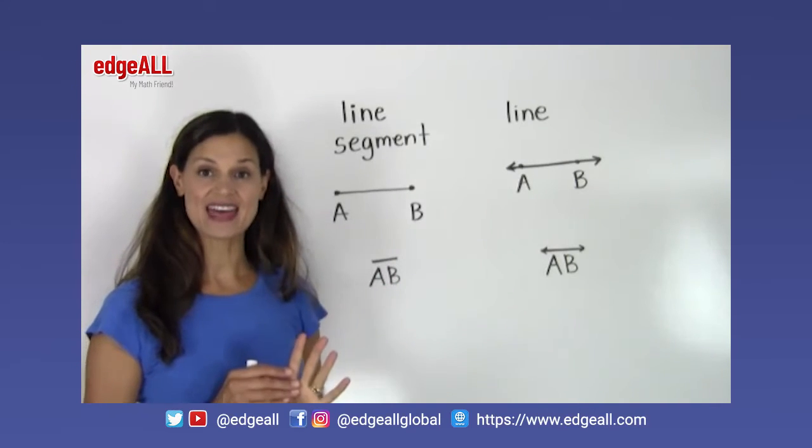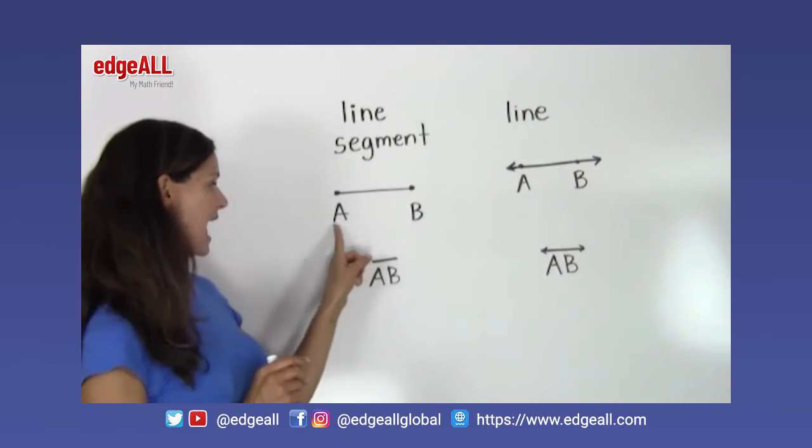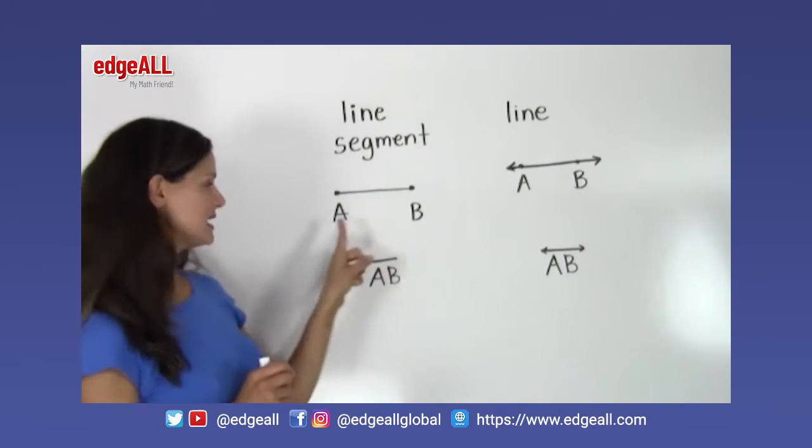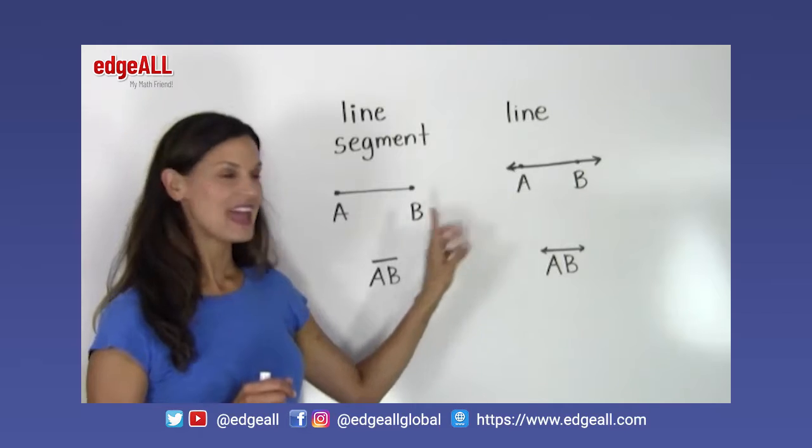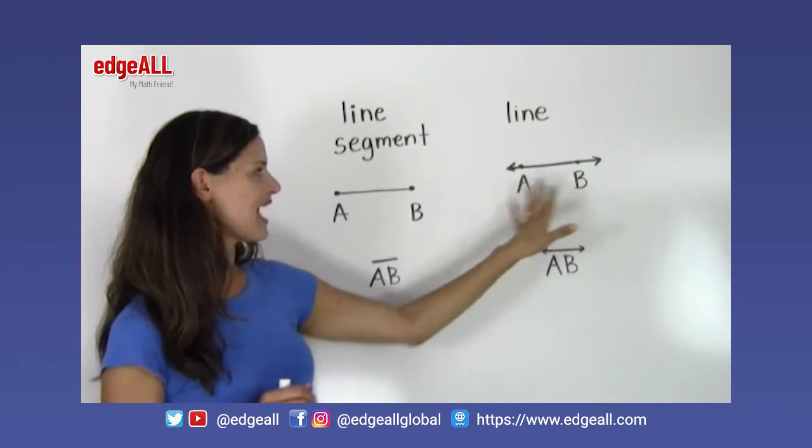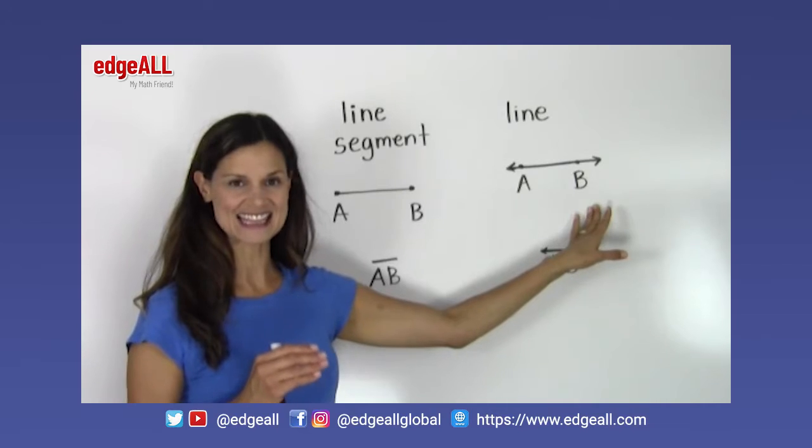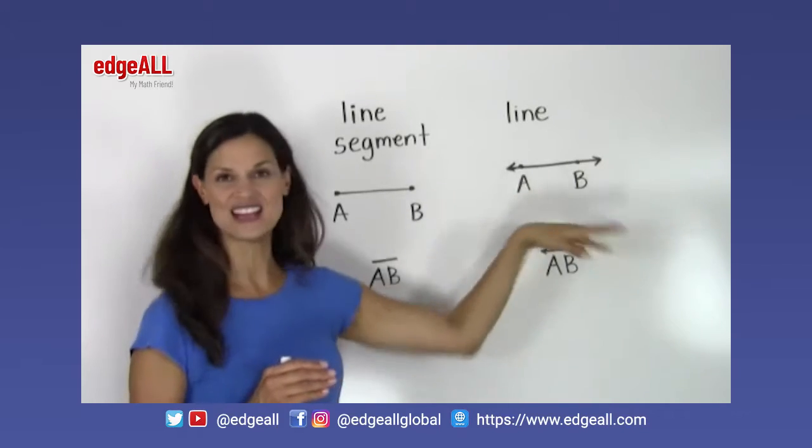The length of the line segment AB is the distance between point A and point B. In this line here, where we have the arrows going in both directions and indicating that this line is infinitely long,